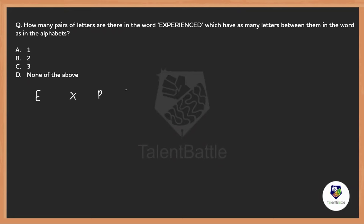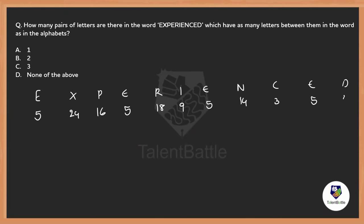Let us write the word 'experienced'. I told you, never go with alphabets alone, go with the numbers: E=5, X=24, P=16, E=5, R=18, I=9, E=5, N=14, C=3, E=5, D=4. Whenever they say number of letters, we have to search in two ways — one forward, one backward — because backward is also possible. Start with the first number, go on in an increment order only. Check how many letters are there starting with a number and another letter which has the same letters as in the alphabet.